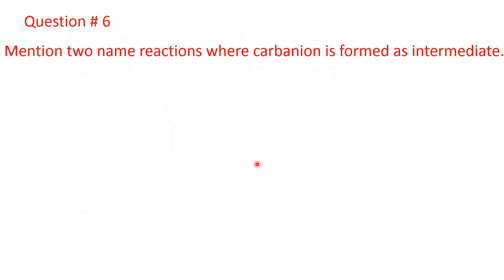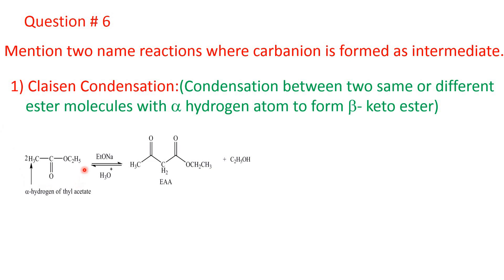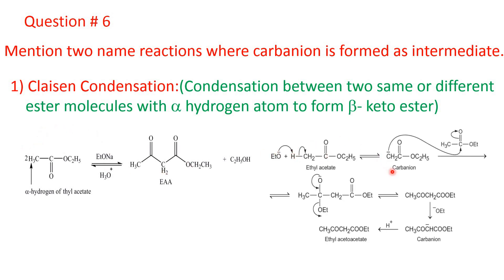Coming to question number six: mention two named reactions where carbon ion is formed as intermediate. First one is Claisen condensation. It is a condensation reaction between two same or different ester molecules having at least one alpha hydrogen atom to form beta-keto ester. This is ethyl acetate — it has this alpha hydrogen atom. So in presence of base, easily carbon ion is formed. This carbon ion can condense with another molecule of ethyl acetate, and finally it forms ethyl acetoacetate, a beta-keto ester. This is Claisen condensation.